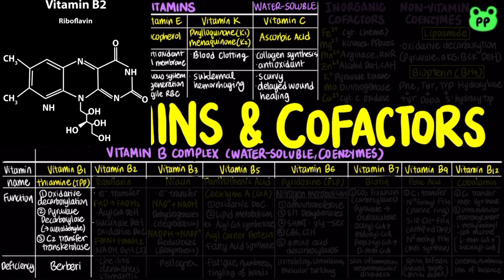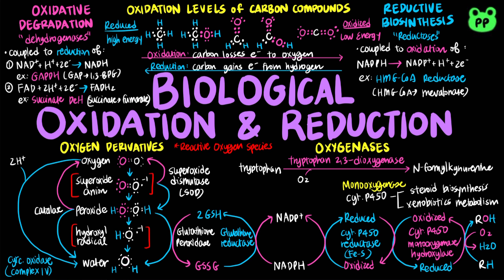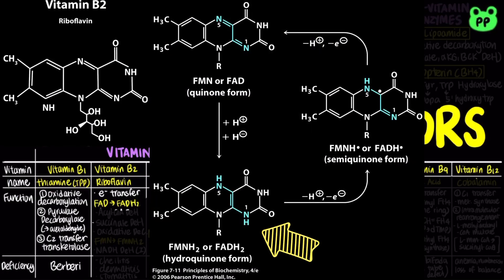Vitamin B2, also known as riboflavin, facilitates electron transfer in metabolic reactions. Vitamin B2 is the precursor of two important coenzymes. The first is flavin adenine dinucleotide, abbreviated as FAD. Oxidative degradation reactions are often coupled to the reduction of FAD to FADH2, a high-energy compound that stores energy harvested during oxidative phosphorylation to generate ATP.